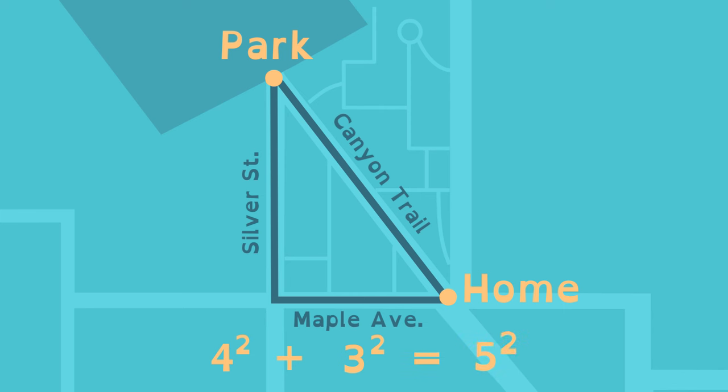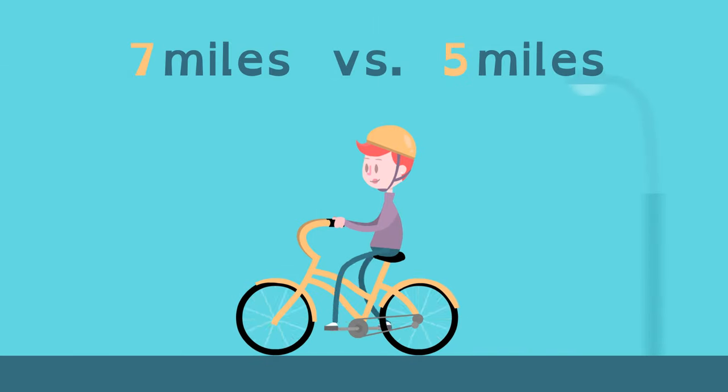She knows that 5 squared is 25. So the hypotenuse, the length of Canyon Trail, is 5 miles. That's 2 miles less of biking for Lucy.